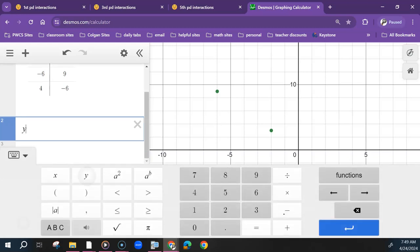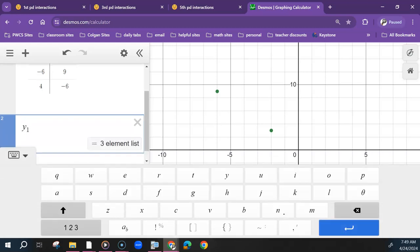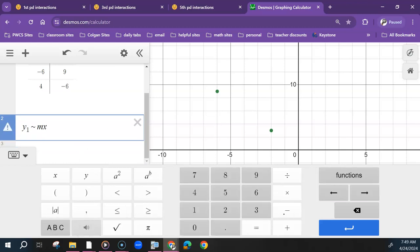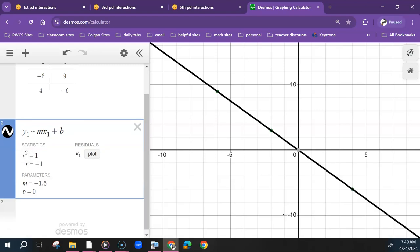And then if I type in my y1 the tilde mx1 plus b, we would get y equals negative 1.5x or y equals negative 1.5x plus 0, either or.